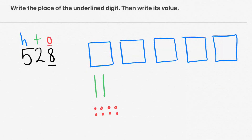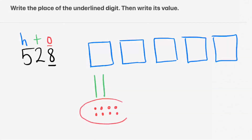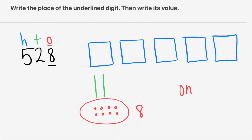So let's go ahead and circle our 1s. If we count, we know we have a total of 8. So we were working with our 1s place, and the 8 is worth 8 because it's in the 1s place.